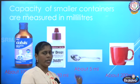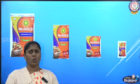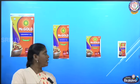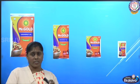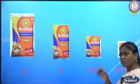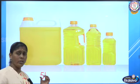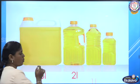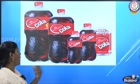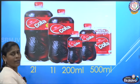Certain liquids in markets are sold in litres and millilitres. Cooking oils are sold in pouches that can hold 2 litres, 1 litre, 500 ml, and 200 ml. Cooking oil is also sold in cans that hold 5 litres, 2 litres, 1 litre, and 500 ml. Cold drinks are sold in bottles that hold 2 litres, 1 litre, 500 ml, and 200 ml.